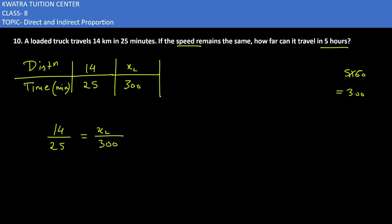Now we will find the value of x2. So 300 will go up and multiply. 14 into 300 over 25. 25 and 25 cancel. Now we can divide to find x2.